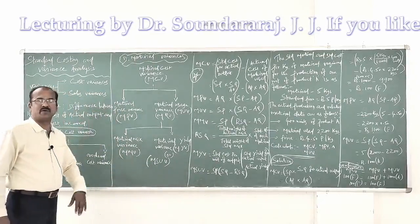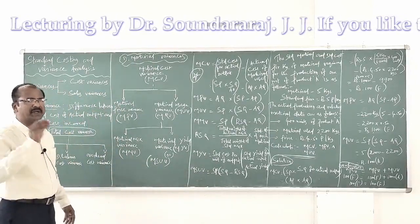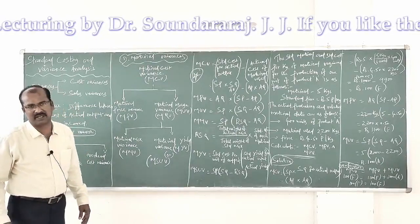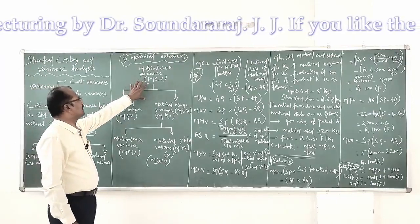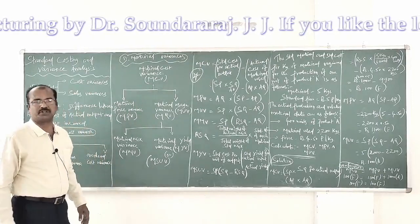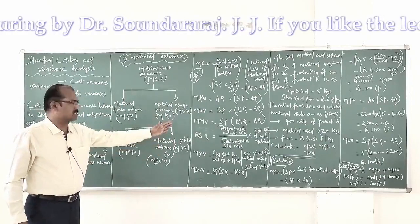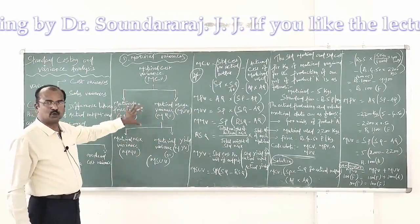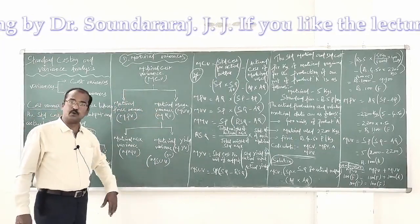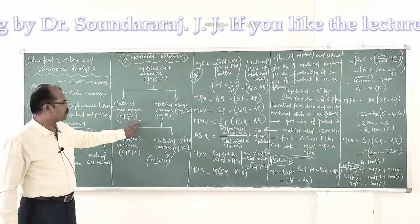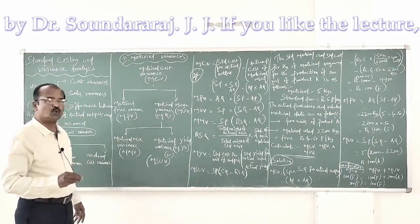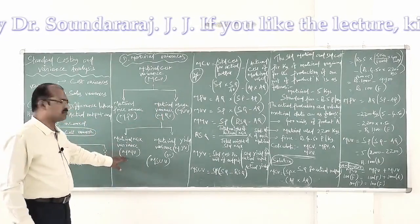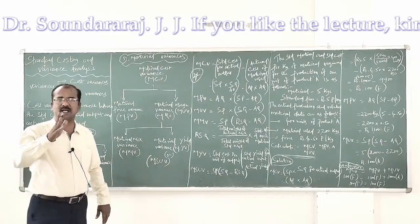Now let us get into the details of direct material variances — in short, we call them material variances. Under material variances, the first variance is material cost variance, shortly known as MCV. MCV is divided into two categories: material price variance (MPV) and material usage variance, also called MUV or MQV (material quantity variance).